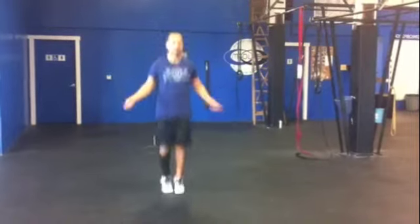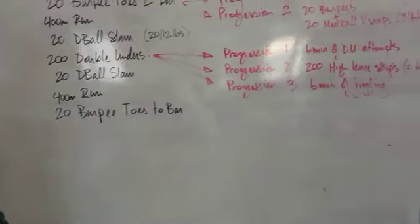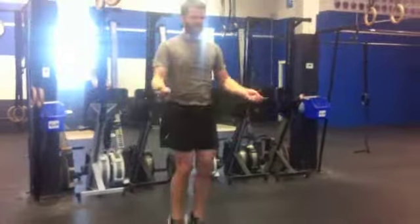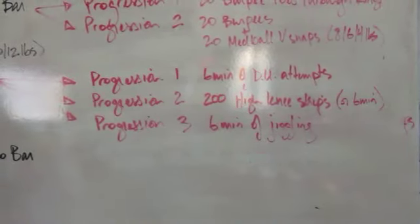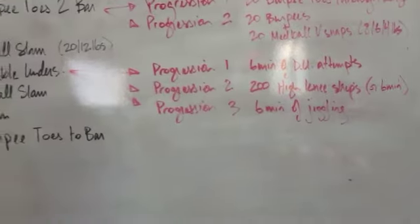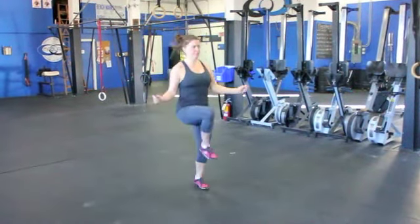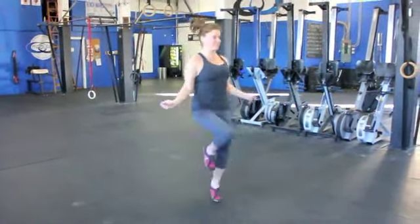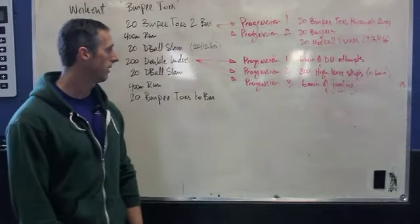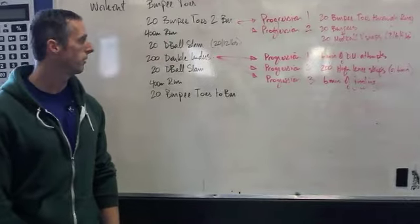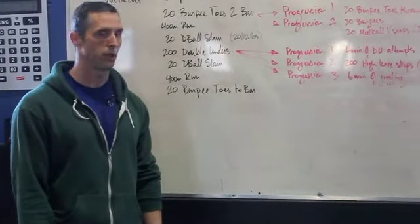And then when we move on down to the double unders, if you're unable to get 200 double unders, progression number one is going to be six minutes of double under attempts. Progression number two is going to be 200 high knee skips or six minutes of attempts, whichever comes first. And progression number three, if you're unable to do one or two, you're just going to spend six minutes jiggling.